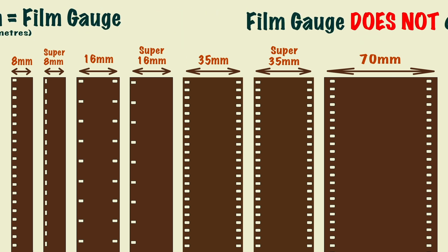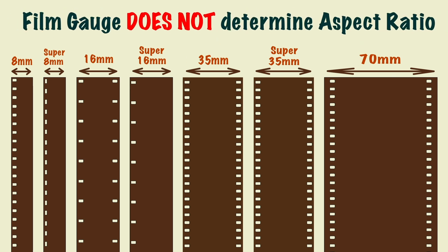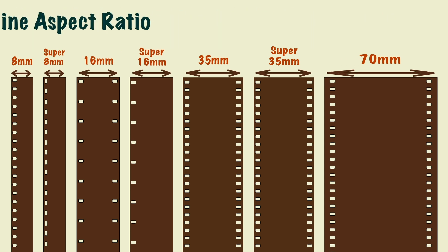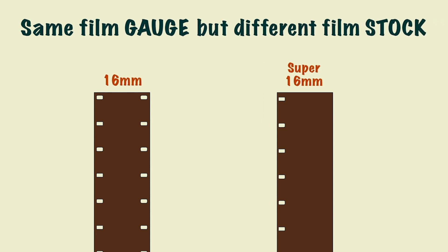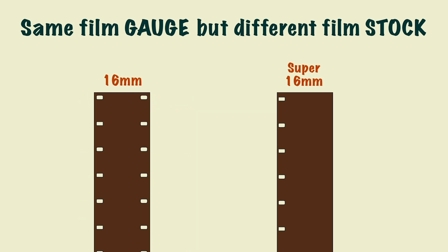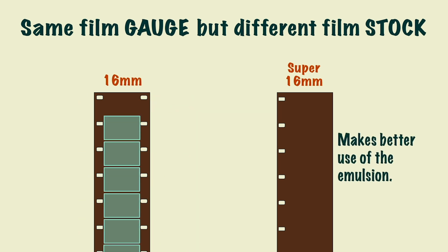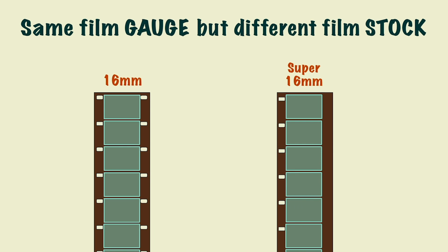It's important to know that this doesn't refer to the aspect ratio. If we take 16mm and Super 16mm, for example, they both have the same film gauge but look slightly different, as you can see here. Super 16mm only has perfs running down one side. When people realised that this film gauge also worked with one row of perfs rather than two, it became more popular as it made better use of the emulsion, giving room for the frame to be widened.